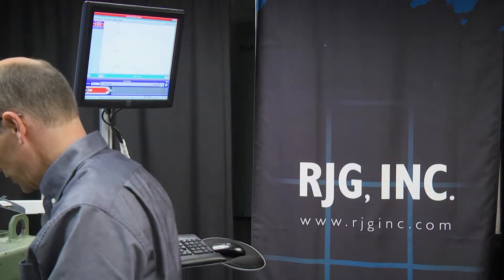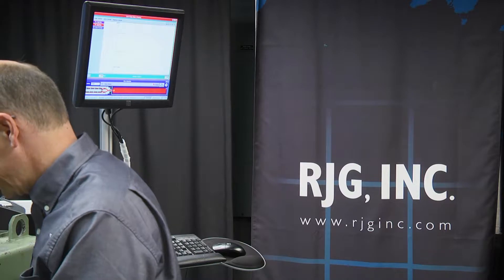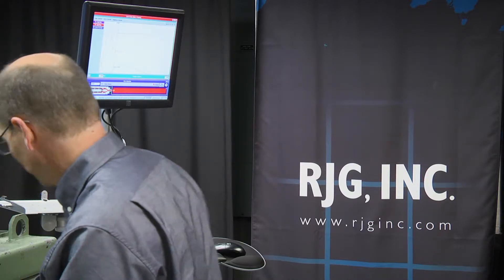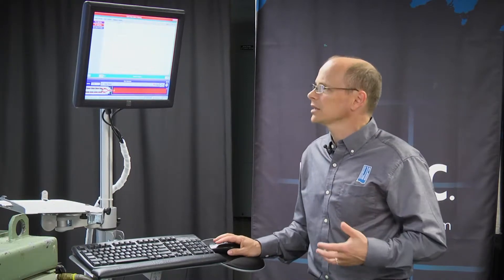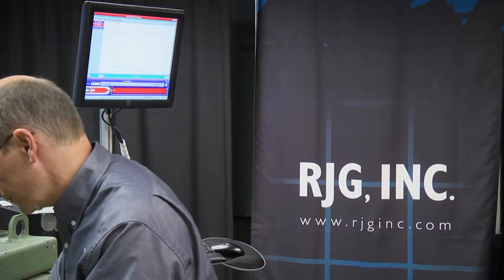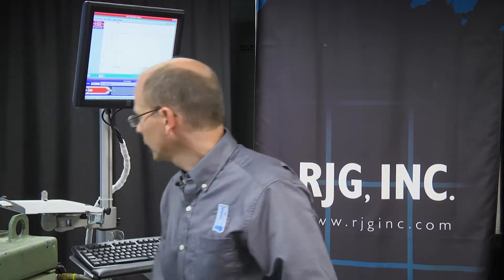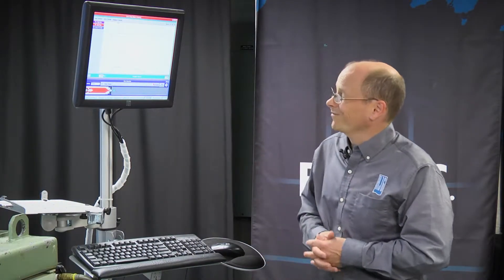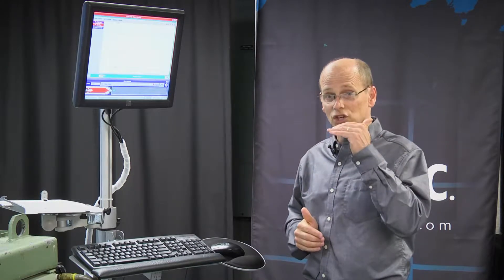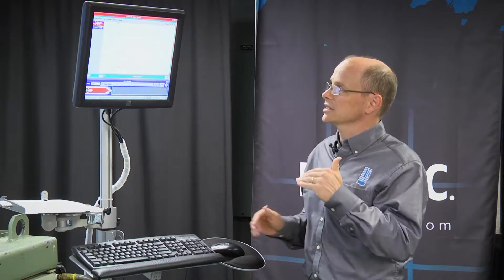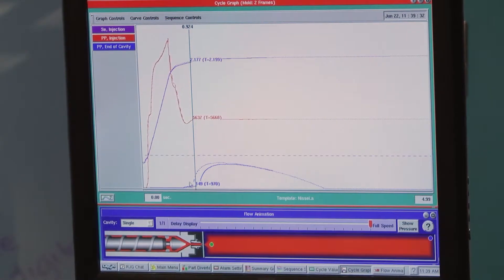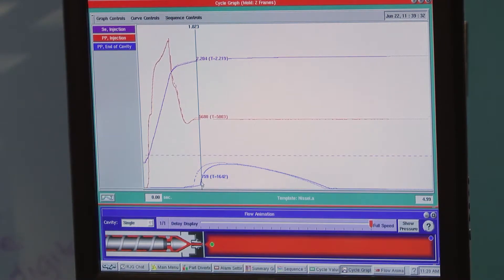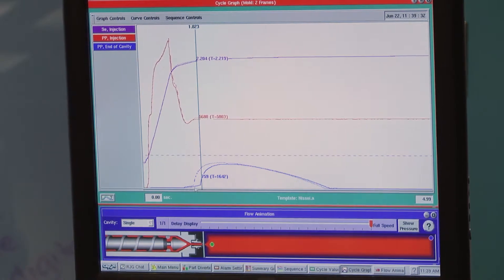I'm going to reduce the shot size. This will take a cycle before this takes effect. Actually, I'm going to reduce it just a little bit more. As I reduce the shot size from 61 to 60 millimeters, notice that it takes longer for the flow front to hit the end of the cavity.